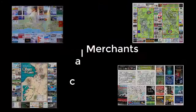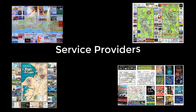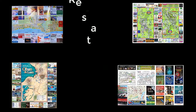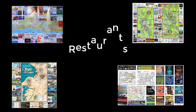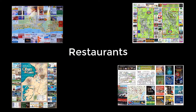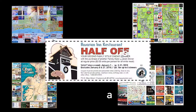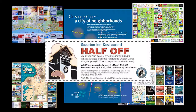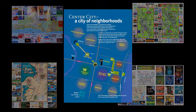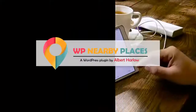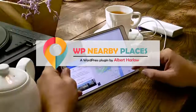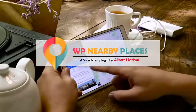Nearby local merchants, service providers, and restaurants would all advertise in these guides, and there would be discount coupons and essential information about the community along with places of interest. Introducing WP Nearby Places.